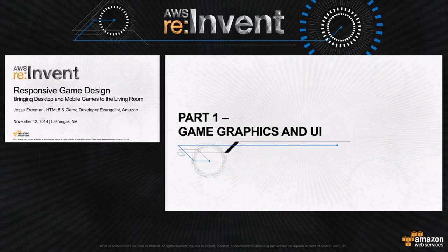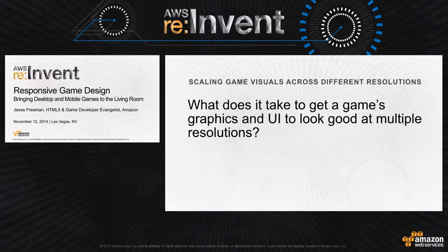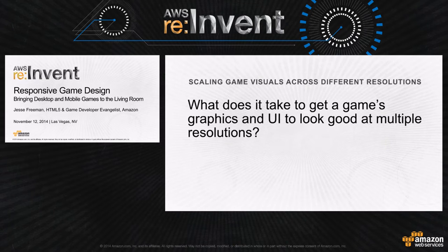Part one: game graphics and UI. When scaling visuals across different resolutions, it's important to make sure the UI looks good. I remember when Civilization was ported to Mac — Macs had a much higher resolution than PCs at the time, so all the UI and graphics were really tiny. The same thing can happen with mobile and tablets. As a game developer, you should design your game at a specific resolution so it looks the same whether scaling up or down across all screen resolutions.